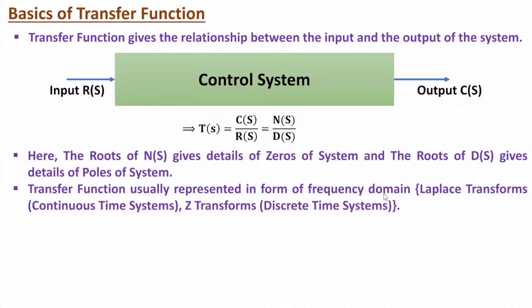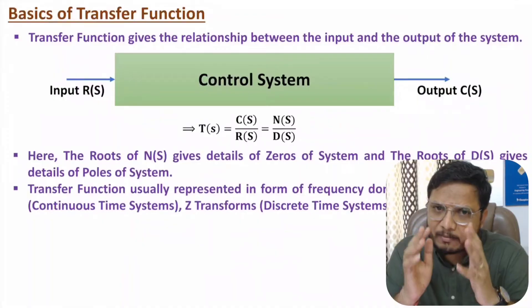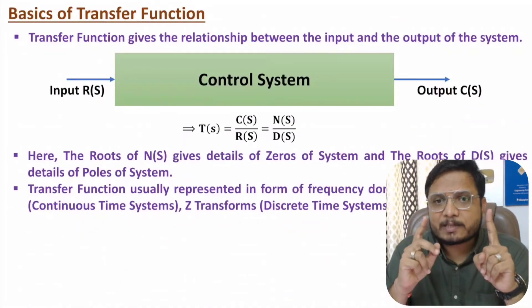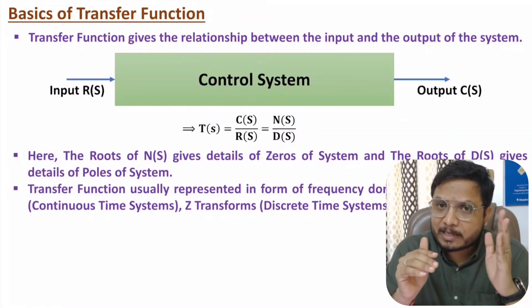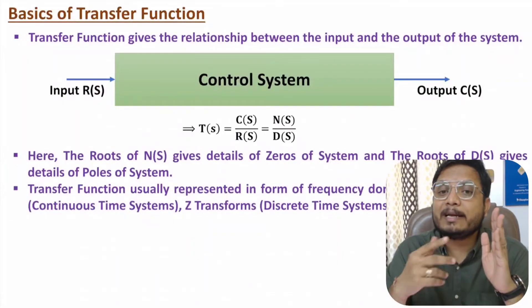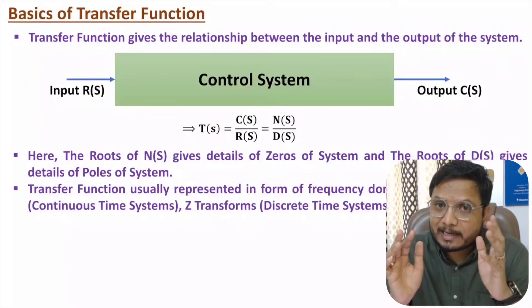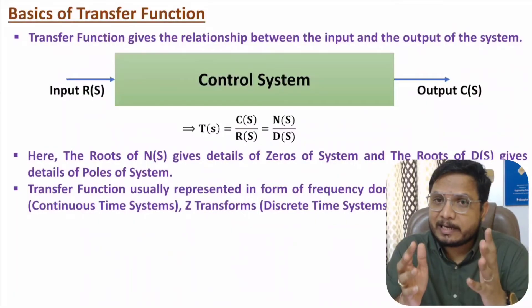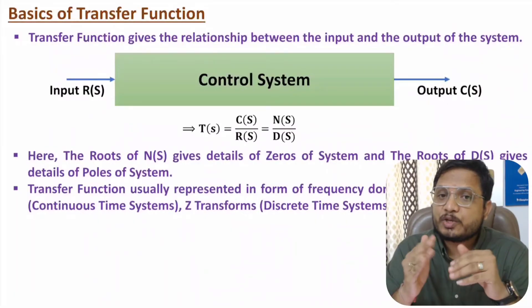There are two ways to represent transfer function in frequency domain: one is by Laplace transform and the second is by Z-transform. Laplace transform is used with continuous time systems, and Z-transform is used with discrete time systems.